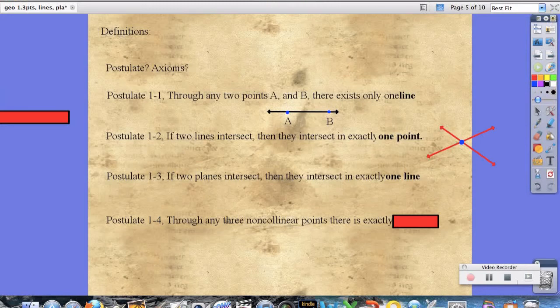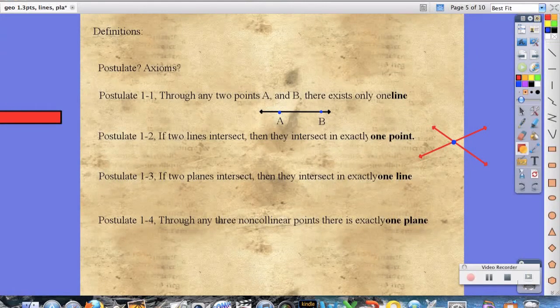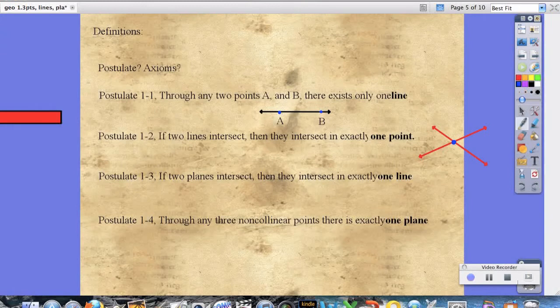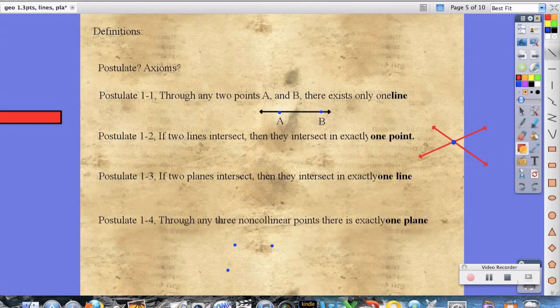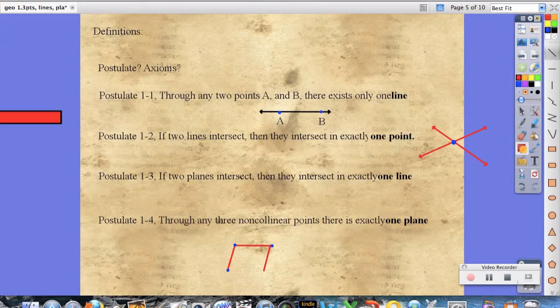Now last but not least is postulate 1-4. It says through any non-collinear points, there is exactly one plane. And the reason why they state that is because if I created three points, because those three are non-collinear, I can draw a plane through those two points, and that's actually how we call them. We label them by three points. Because if they had infinite width and height, these three points could theoretically just spread out as much as they want.